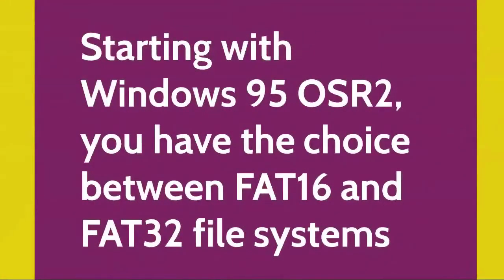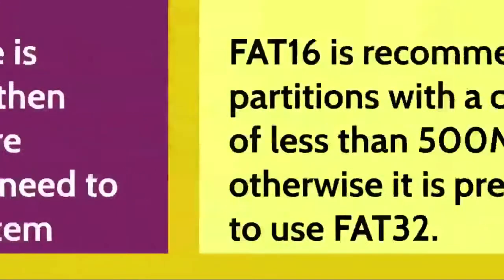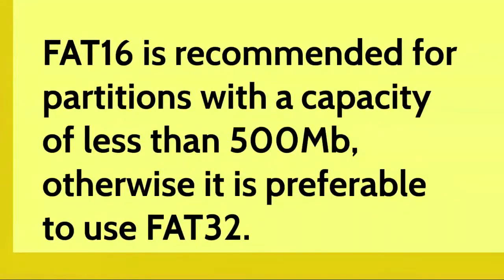Starting with Windows 95 OSR2, you have the choice between FAT16 and FAT32 file systems. If the partition size is greater than 2 GB, FAT16 is excluded and you need to use FAT32 or modify the size of the partition. Below this limit, FAT16 is recommended for partitions with a capacity of less than 500 MB; otherwise, it is preferred to use FAT32.